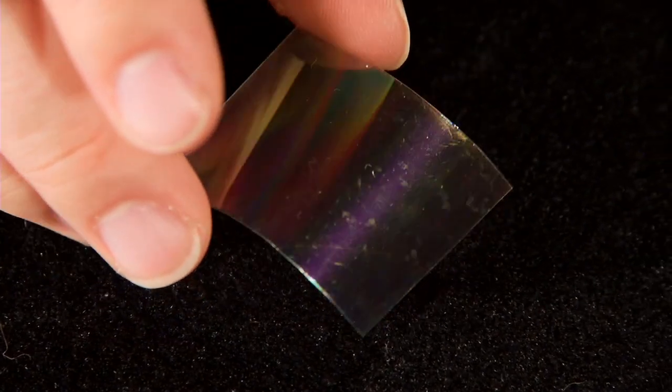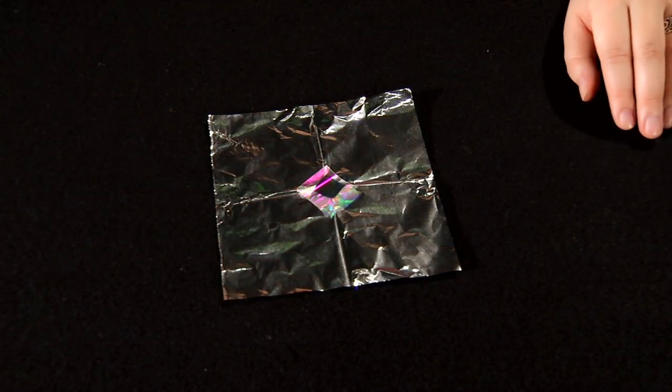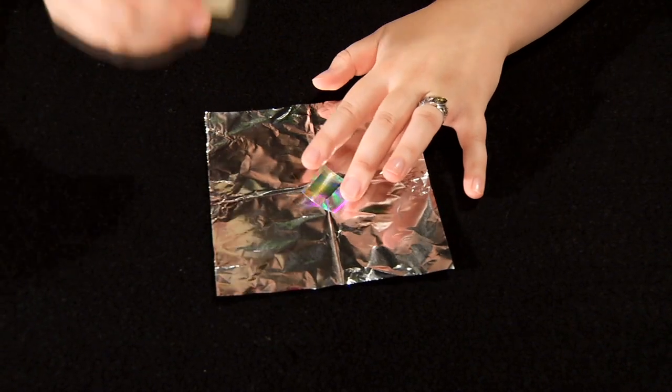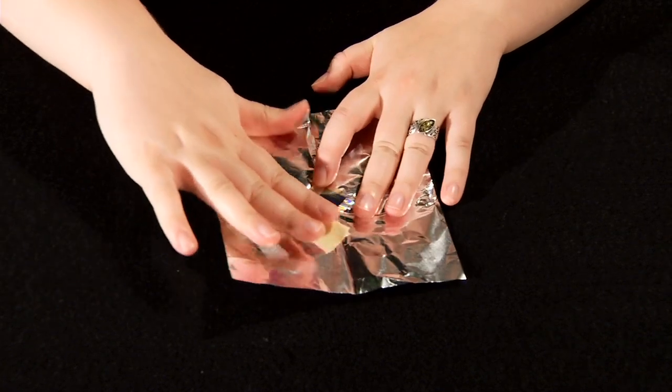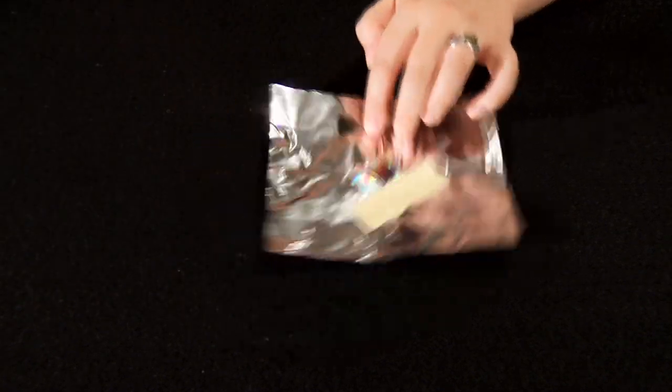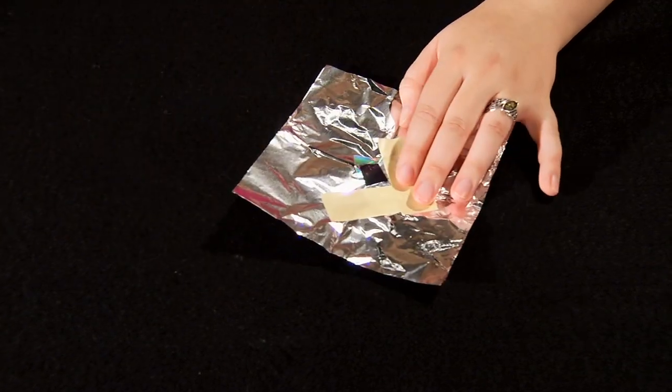The diffraction grating, which looks like a piece of clear plastic with a rainbow sheen to it, is going to be taped over this hole so the hole should be just a little bit smaller than the piece of diffraction grating. Be very careful to touch the diffraction grating as little as possible so you don't leave fingerprints on it. Tape the edges so you're still able to see through the grating.